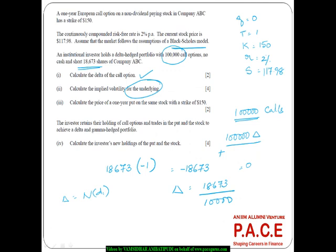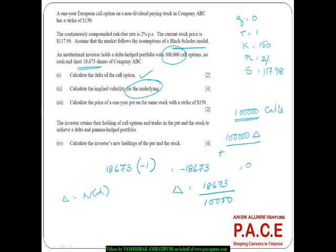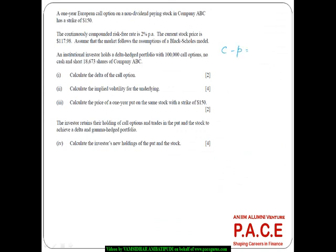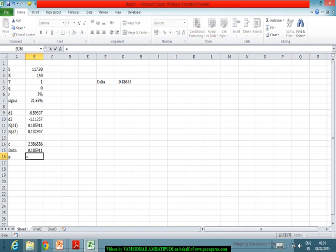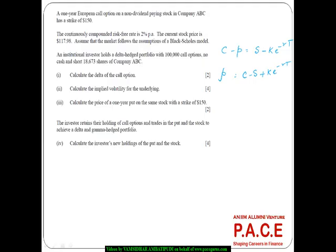Next, calculate the price of a one-year put on the same stock with a strike price of 150. For this, I can use the put-call parity relationship: C − P = S − K·e^(−rT), so P = C − S + K·e^(−rT). Working this out, the price of the put option comes to approximately 31.43.